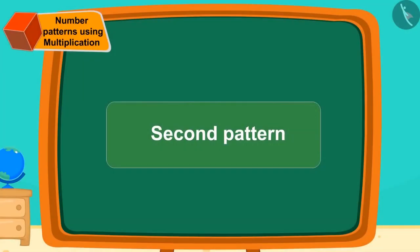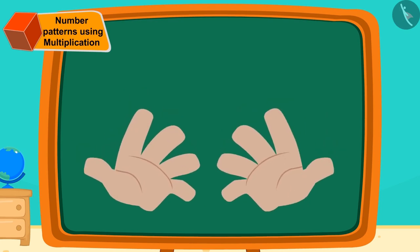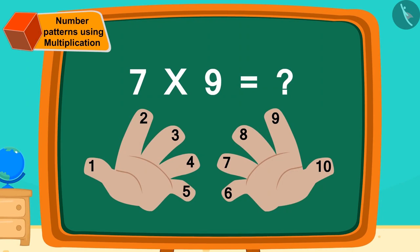See, we can easily multiply any multiplication of nine on our fingers in another way. Suppose we have to do seven times nine. We have to find the answer of seven times nine here. So we will bend our seventh finger in this way.